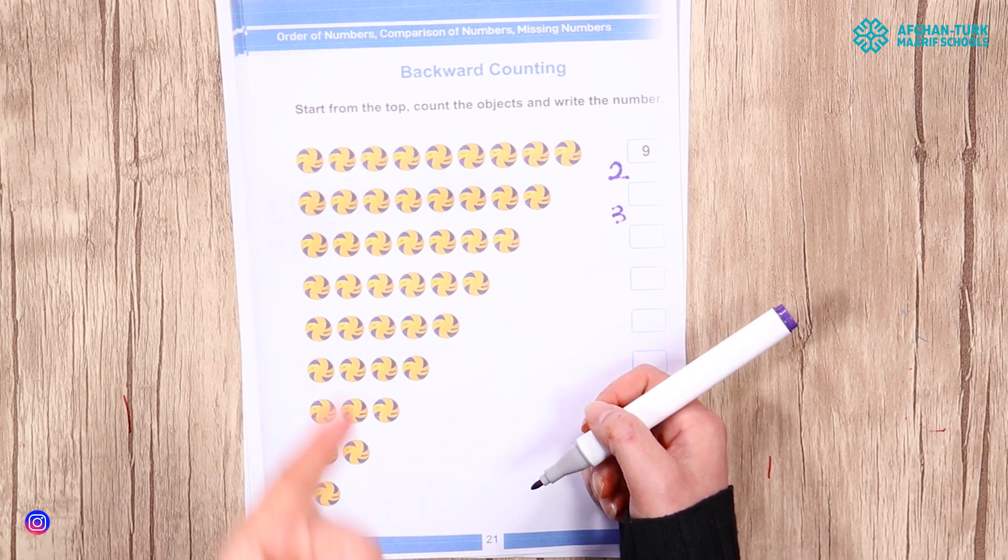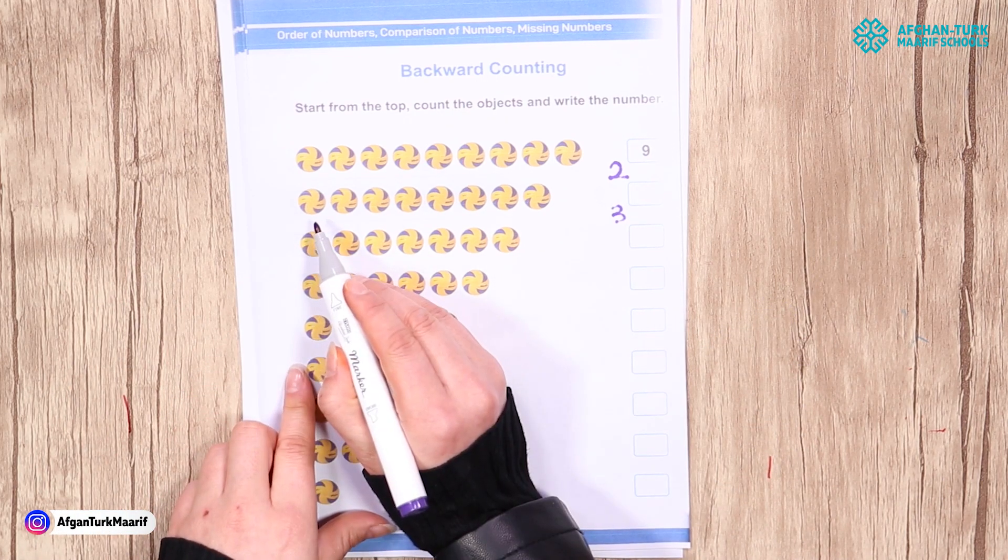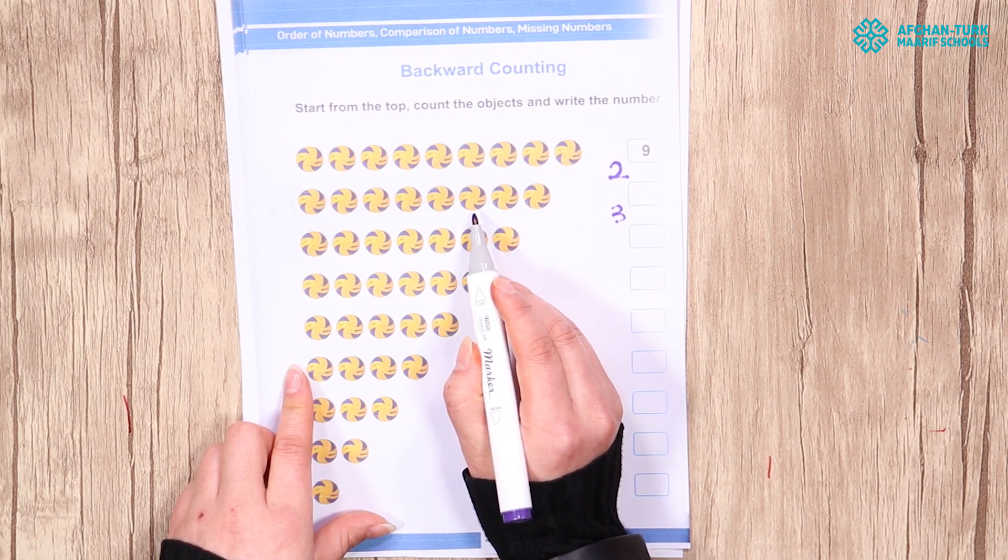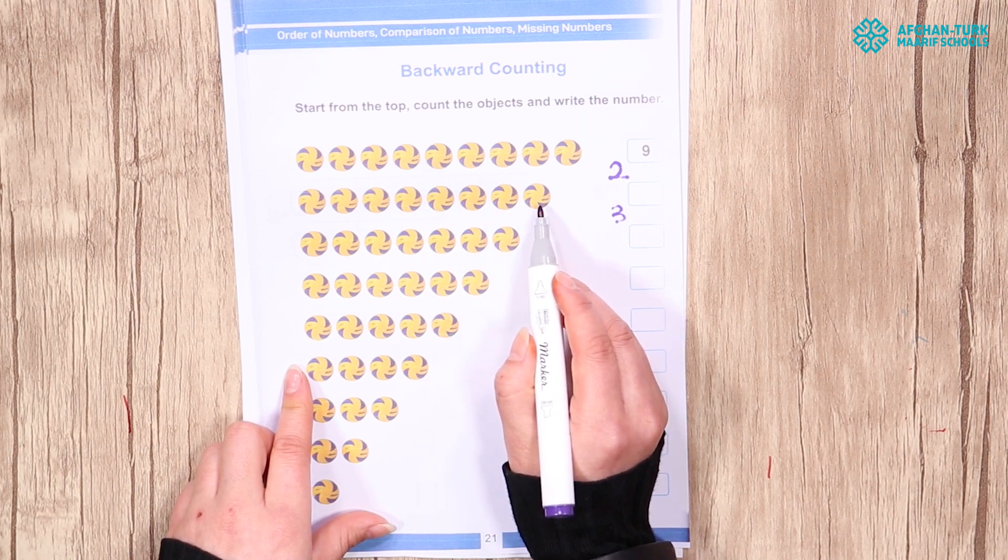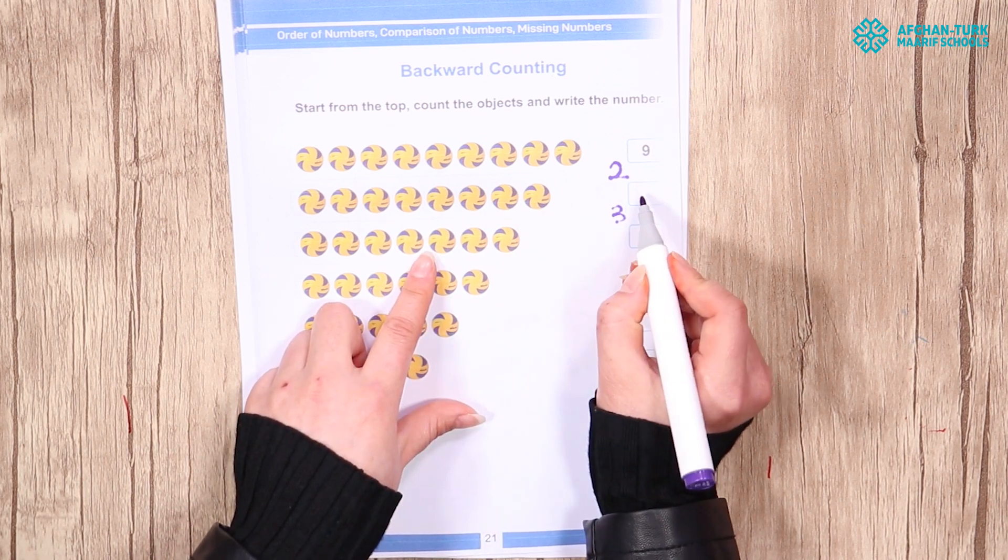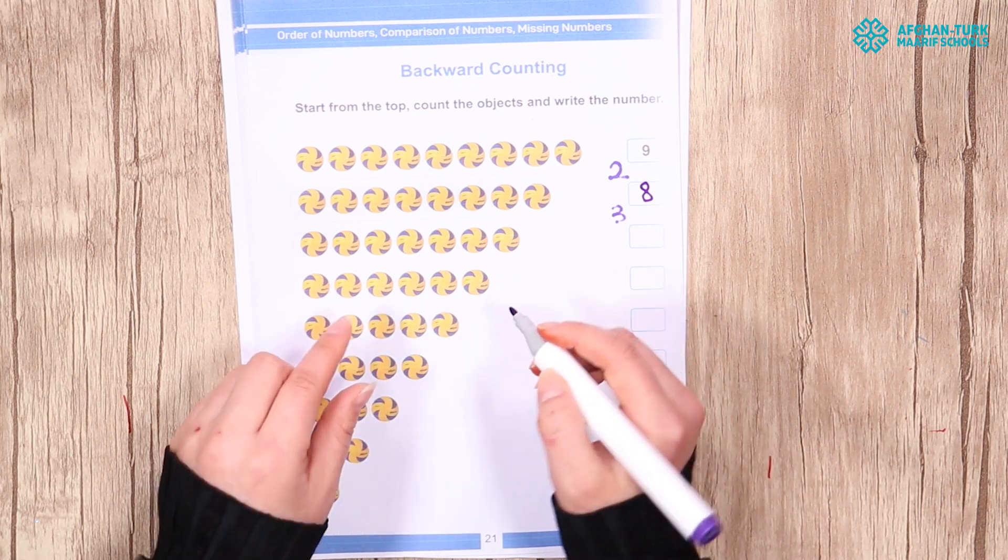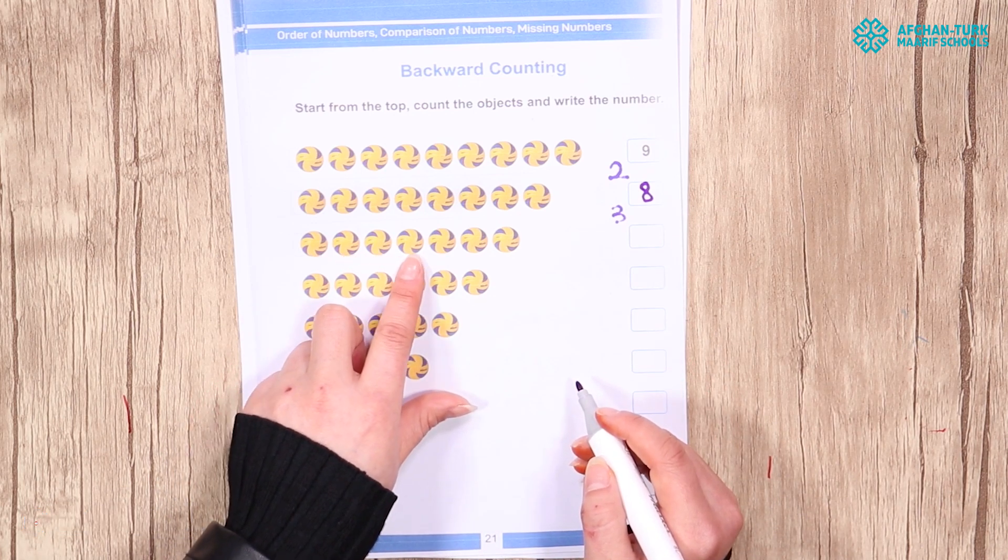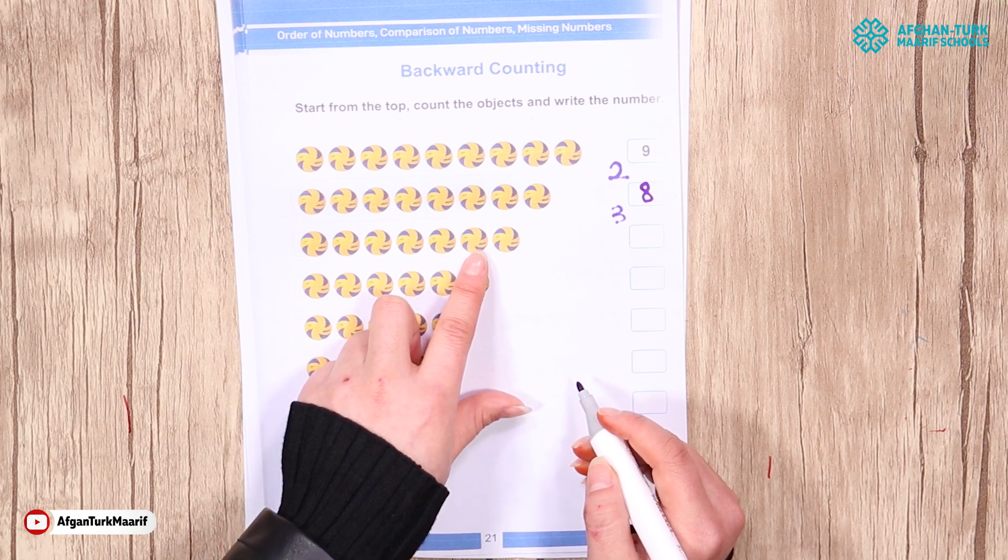Let's count again. 1, 2, 3, 4, 5, 6, 7, 8. It is 8. Right, it is 8. Now, 1, 2, 3, 4, 5, 6, 7.